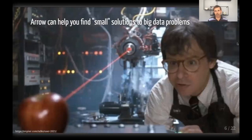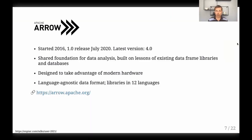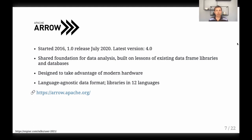Before I get into that, a little about Arrow itself. The Arrow project started in 2016. We had our 1.0 release last year, indicating stability of the columnar format. Our latest release is 4.0, with 5.0 coming out later this month — we do releases every three months. Arrow is fundamentally a format for how data should be represented in memory: a columnar data format with implementations in 12 different languages, R being one of them.